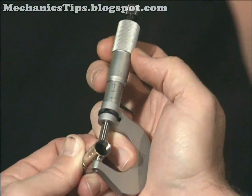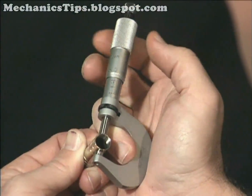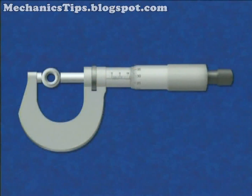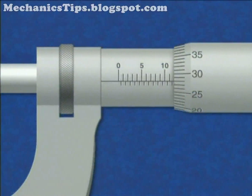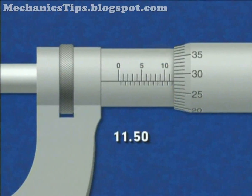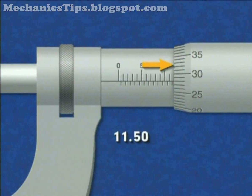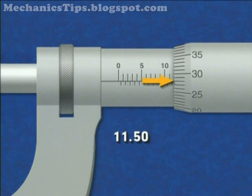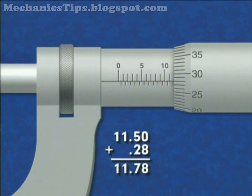The thimble is rotated and the spindle advanced until the feature is held between the anvil and the spindle face. To read this micrometer, add the number of millimeters and half millimeters visible on the sleeve to the number of hundredths of a millimeter indicated by the thimble graduation, which coincides with the reading line on the micrometer sleeve.